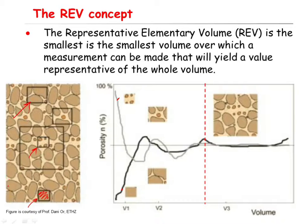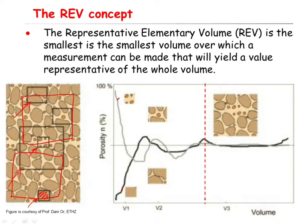But if you work with this large window, no matter where you place your window, you will always get a nearly similar value for the porosity. For example, if you place it somewhere here, or if you place it here — in all these cases, you will get a nearly similar value for the porosity. So REV is the smallest size of such windows that can represent the entire domain. The smallest size of the window that can represent the domain — the REV size — has been indicated by this red dashed line on this curve.